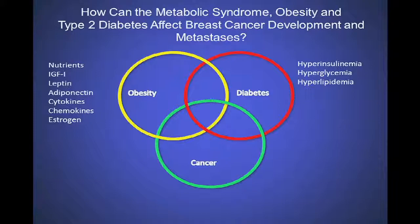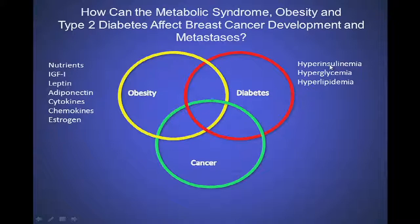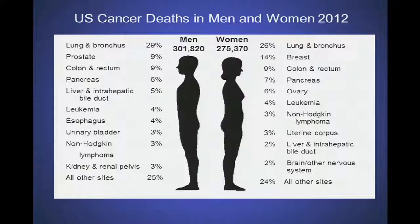There are other factors as well - nutrients playing into obesity, insulin-like growth factor, leptin which is often increased in obesity and seems to drive cancer cells. The reduction in adiponectin, which is what's happening in obesity and diabetes - adiponectin is the good adipokine - means you lose its protective effect on cancer. And then inflammatory cytokines, and for hormonal cancers such as breast cancer, estrogen obviously plays a role. All of these can be abnormally elevated in patients with type 2 diabetes and obesity and relate to cancer increase.